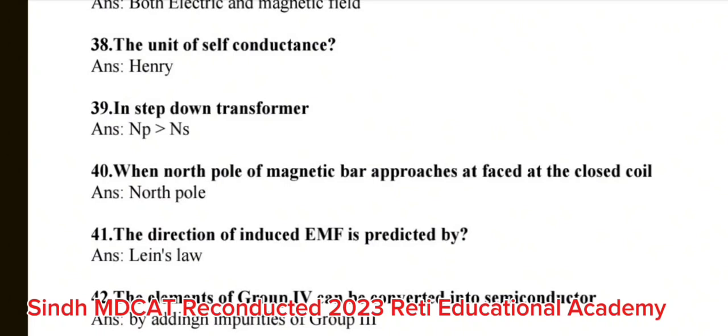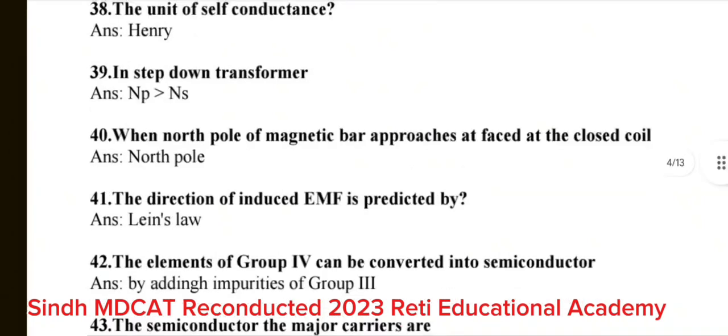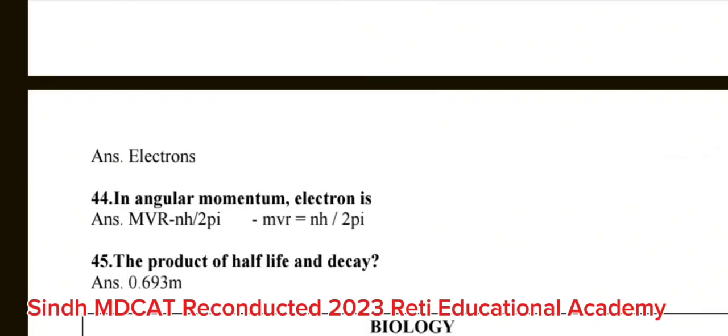Question number 42: The elements of group 4 can be converted into semiconductor. The correct answer is by adding impurities of group 3. Question number 43: The semiconductor, the major carriers are? The correct answer is electron. Question number 44: In angular momentum, electron is? Question number 45: The product of half life and decay. The correct answer is 0.693.